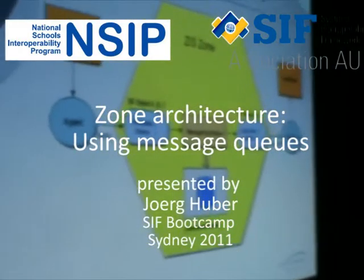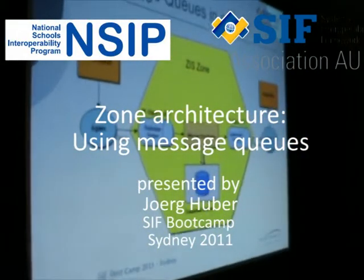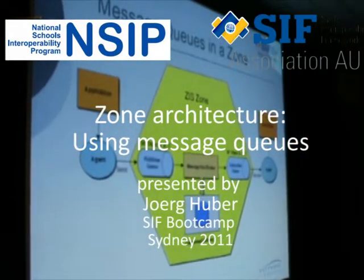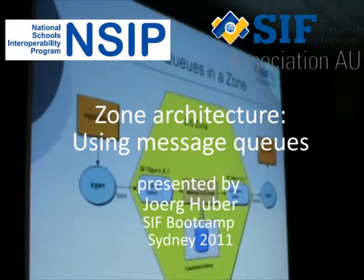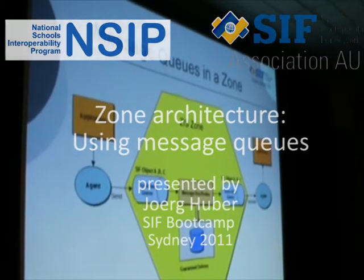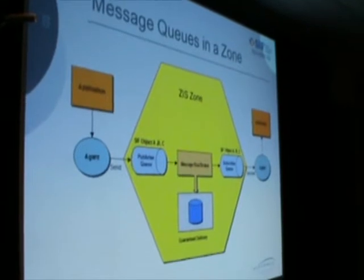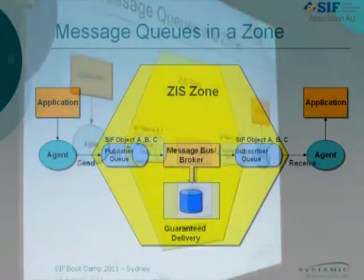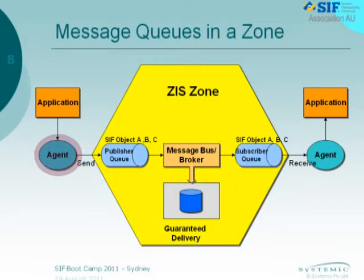A few pictures which hopefully help you understand what's happening internal in a zone. We've got an application here — it's an agent — that sends messages on the zone. Remember I said before, each agent has a message queue. You can see that agent has his message queue.